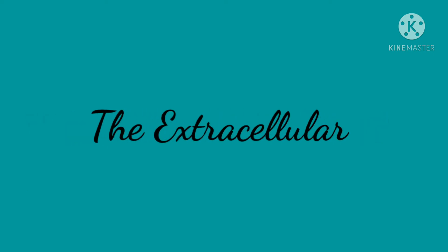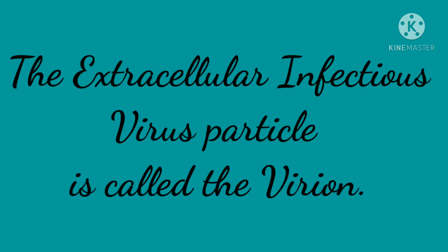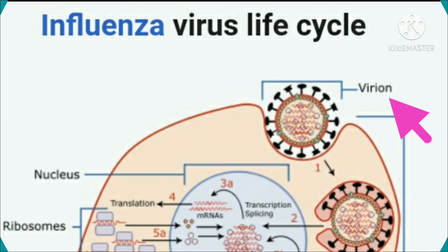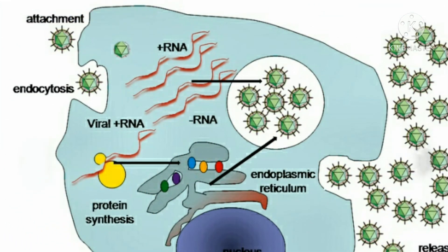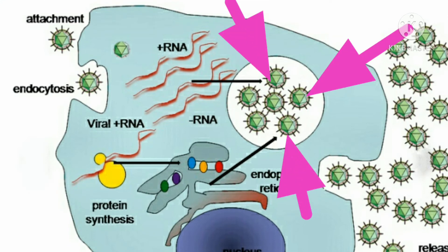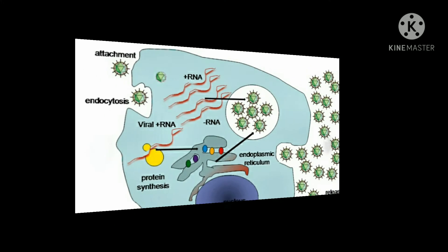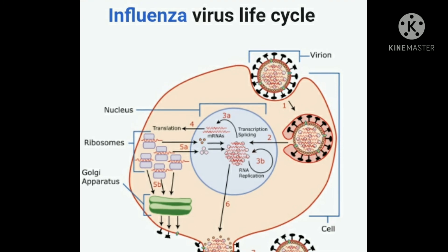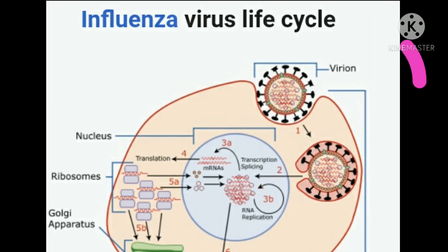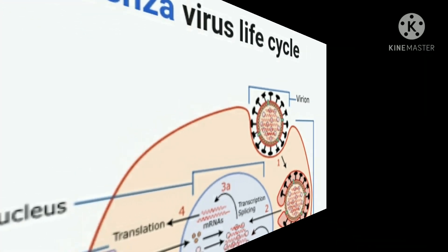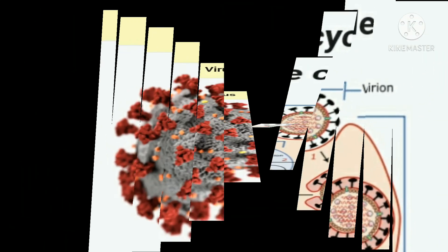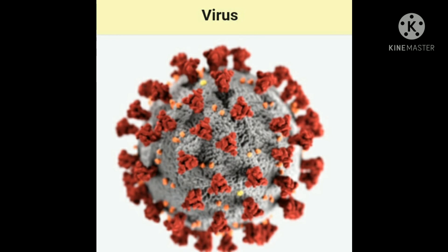Next we will see what are virions. The extracellular infectious virus particle is called the virion — that is the extracellular infectious form of a virus. When a virus is present inside the cell we call it the virus itself, but when a virus is present outside the cell we call it the virion. The virion is the complete infective form of a virus outside a host cell.